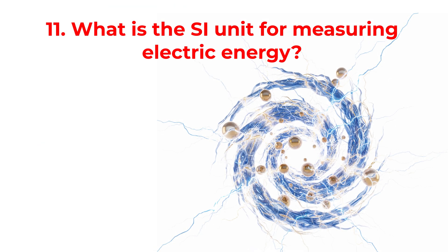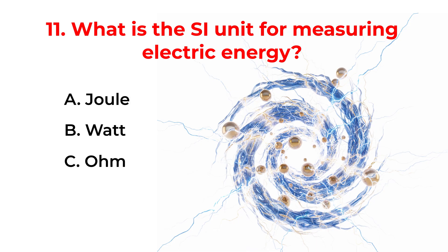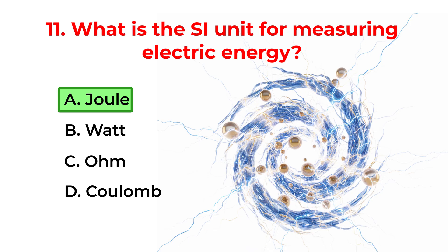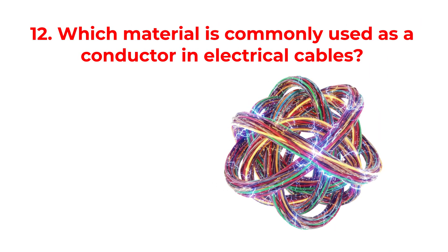What is the SI unit for measuring electric energy? A. Joule. B. Watt. C. Ohm. D. Coulomb. Correct answer is option A. Joule. Which material is commonly used as a conductor in electrical cables?